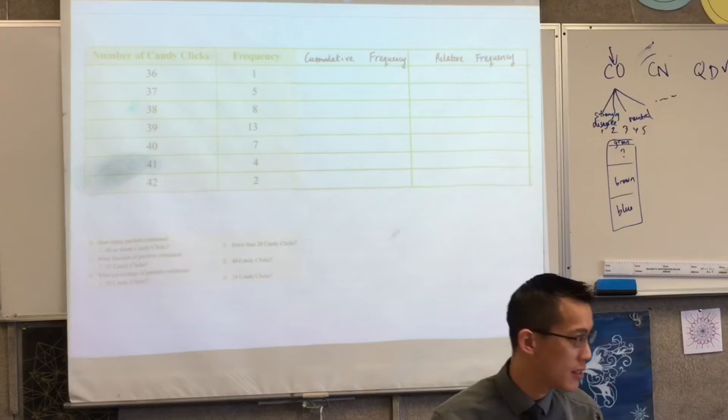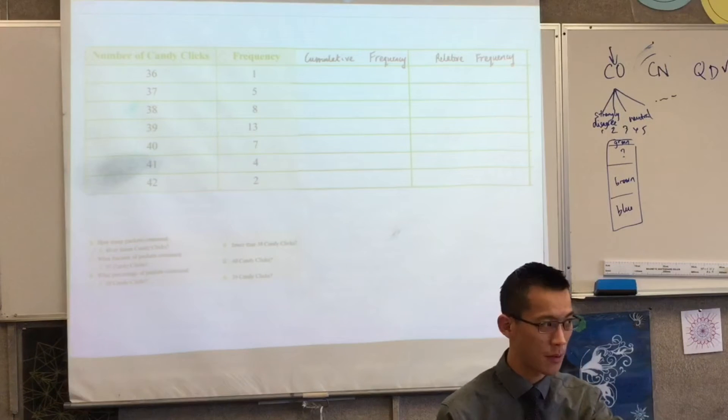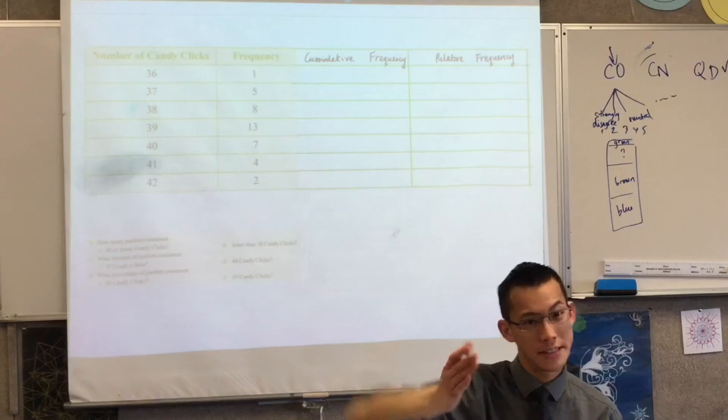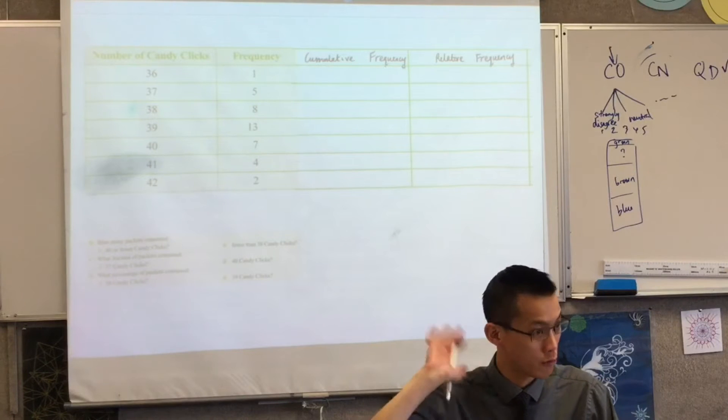Now this is a frequency table. You've had to construct some of these in the previous exercise. You may have had an extra column for tallying and then you count them all up by the end and this is what you'll result with.